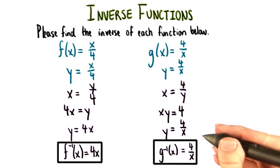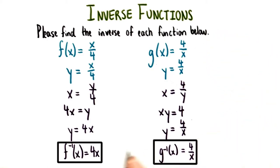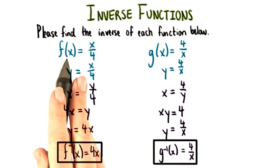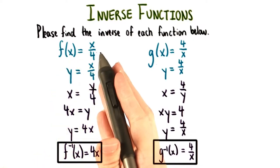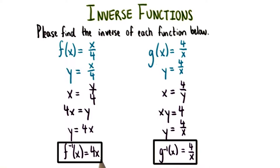Going through the steps that we know and love now for finding inverse functions, here's what we end up with. Starting with f(x) equals x over 4, f inverse of x equals 4x.